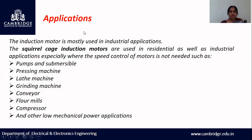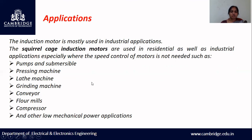This induction motor is mostly used in industrial applications. Squirrel cage induction motors are used in residential as well as industrial applications, especially where speed control of the motor is not needed. These are used in submersible pumps, pressing machines, lathe machines, grinding machines, conveyor belts, flour mills, compressors, and other low mechanical power applications.